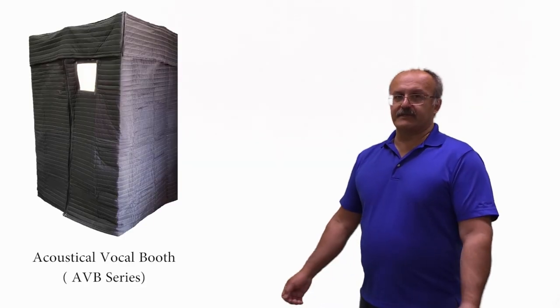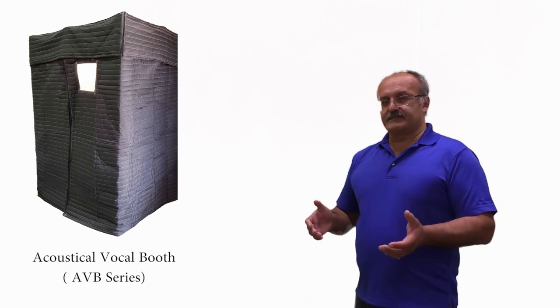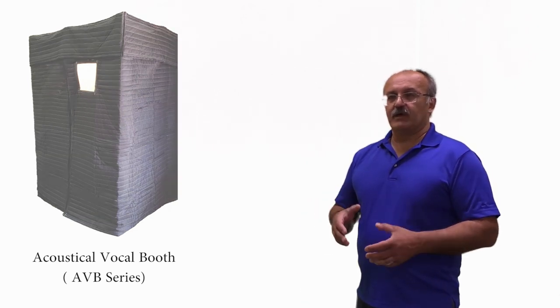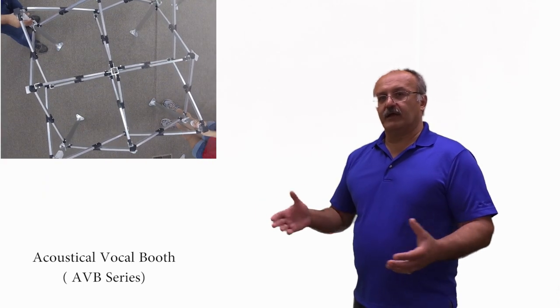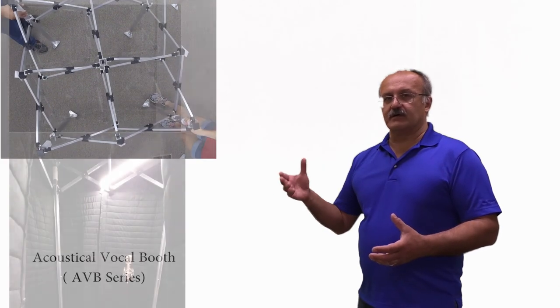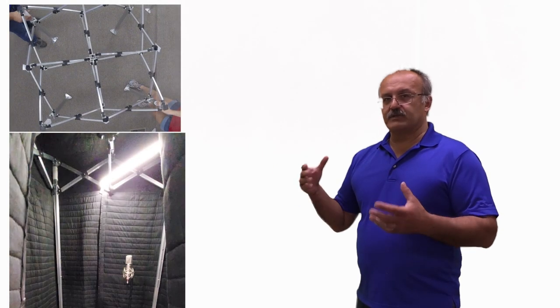The AVB Series comes in different sizes but the principal installation is the same. It includes the frame which opens up without any assembly required and it also includes the acoustic covers, sound absorption covers.